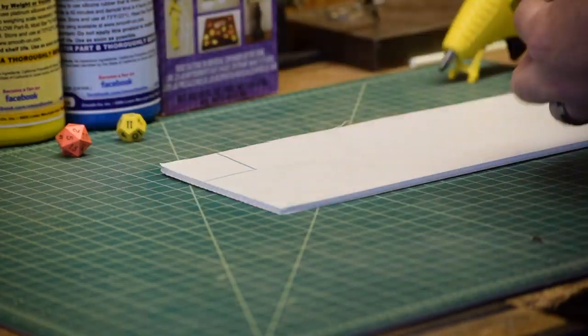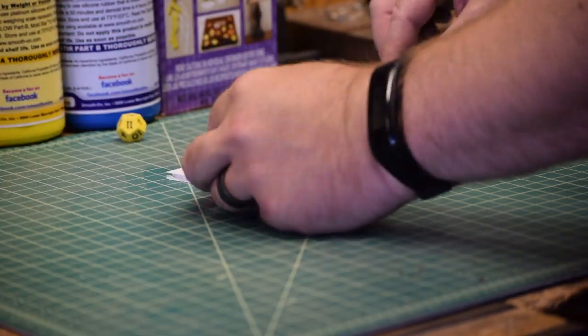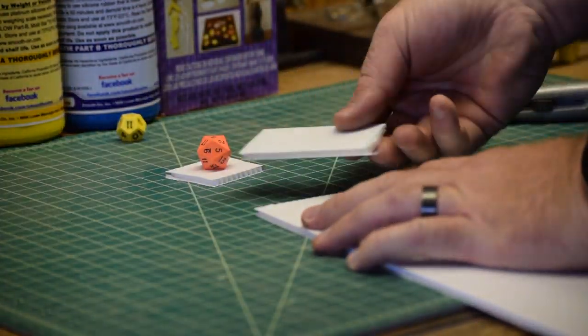Once the sprue mark is removed, we can begin building the mold for the silicone. For the initial mold set, I'm using a D20 and a D12 dice.